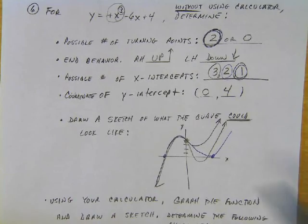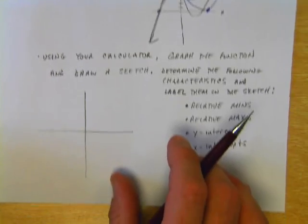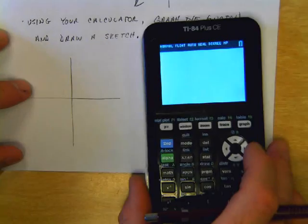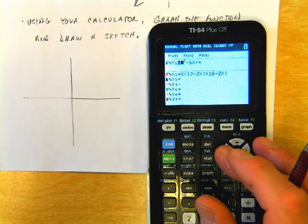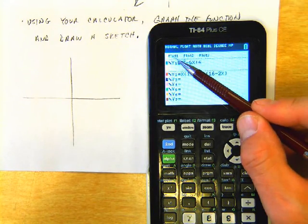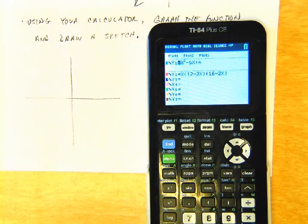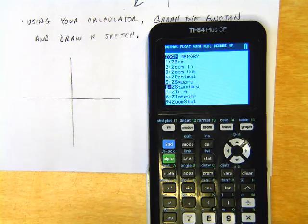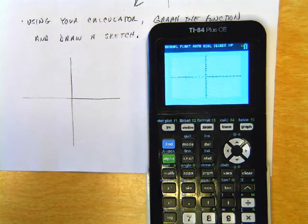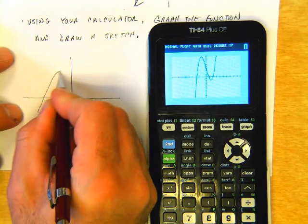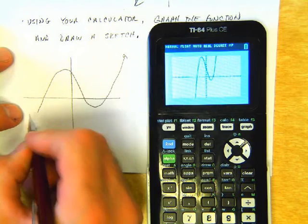Let's use our calculator and find out what it does look like. I'm going to go to Y=, and in Y1, plug in the polynomial. I'll make sure the plots are all turned off, then do a Zoom 6 to reset my window. There's the polynomial.